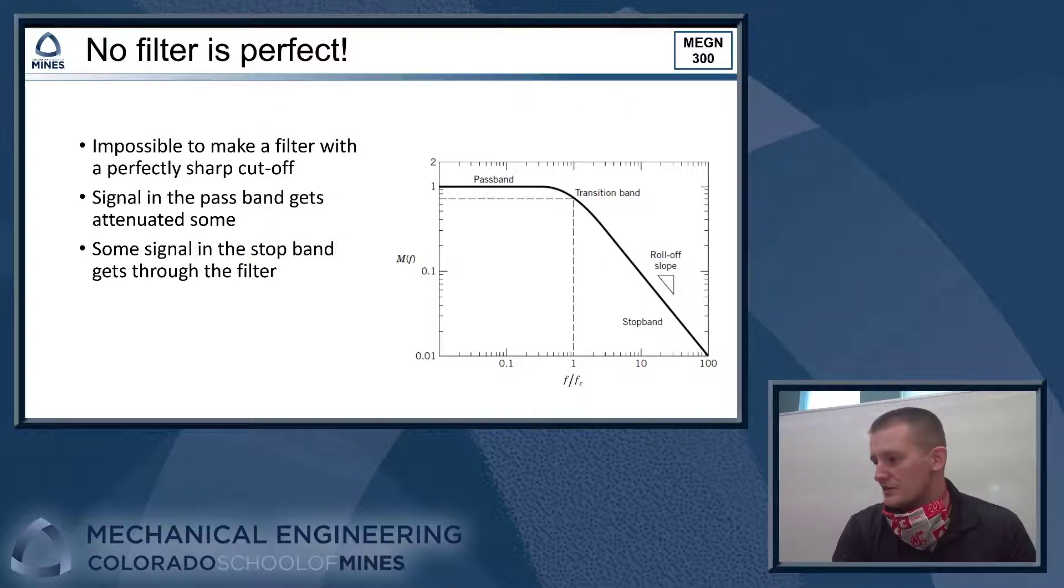So we have a graphic here that shows kind of how this works. So along the bottom, you have frequency related to the cutoff frequency. Where you're equal to the cutoff frequency, that's where we start to go into the transition band, where we have this roll-off. You can see the magnitude of the signal is getting reduced in the stop band there, but it's not going perfectly to zero.